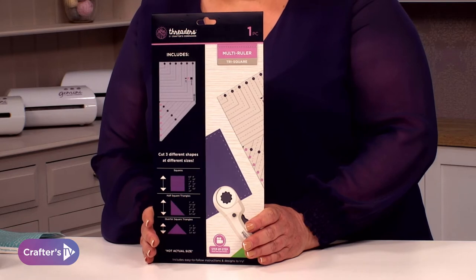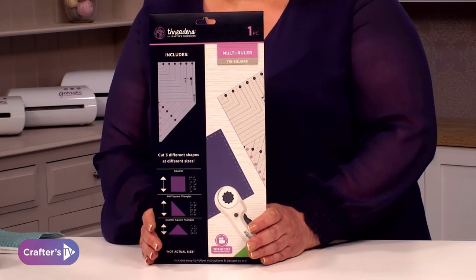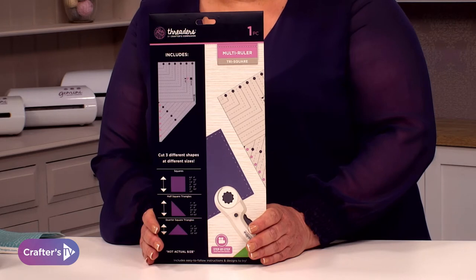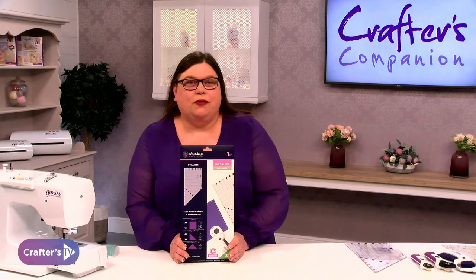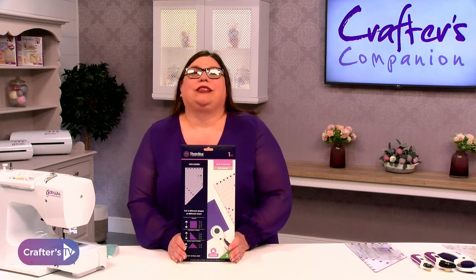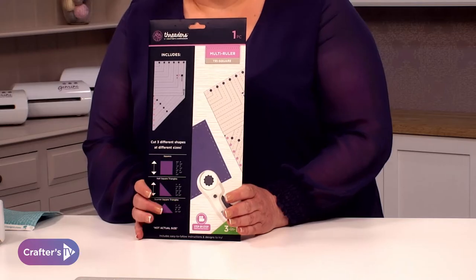This is our tri-square ruler. With this you're going to be able to cut your squares, your half-square triangles and your quarter-square triangles. The ruler is all color-coded to help you get the different sizes and make some fantastic projects. Let's see how it works.